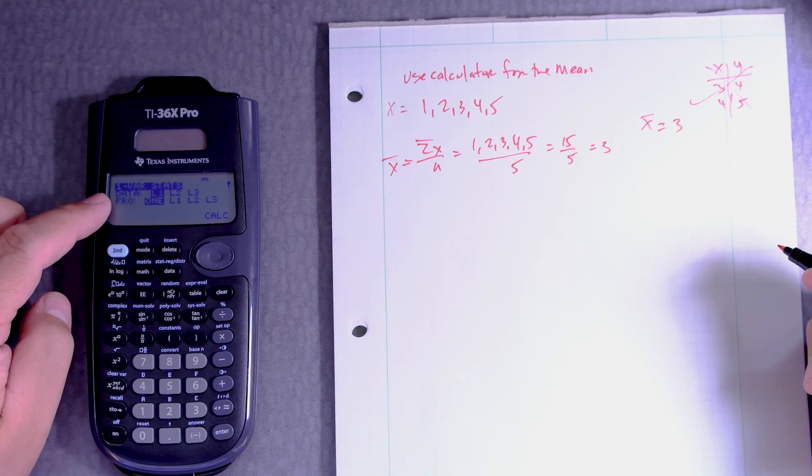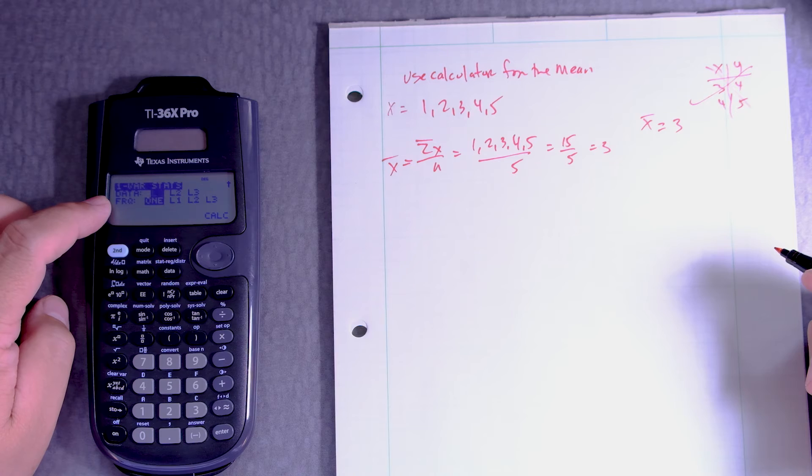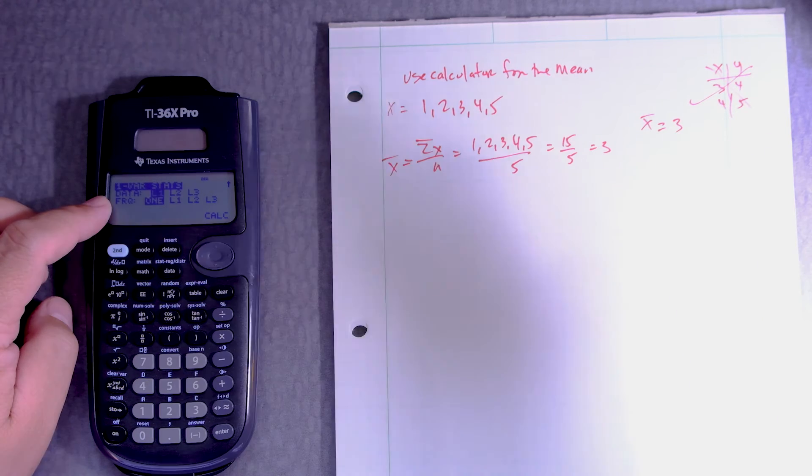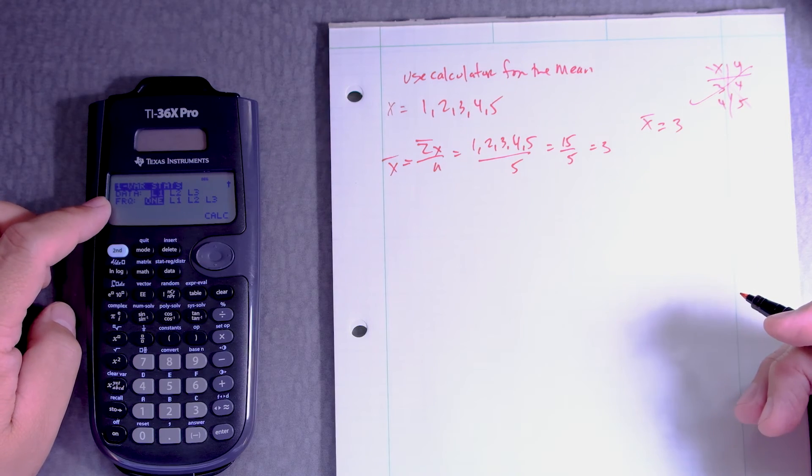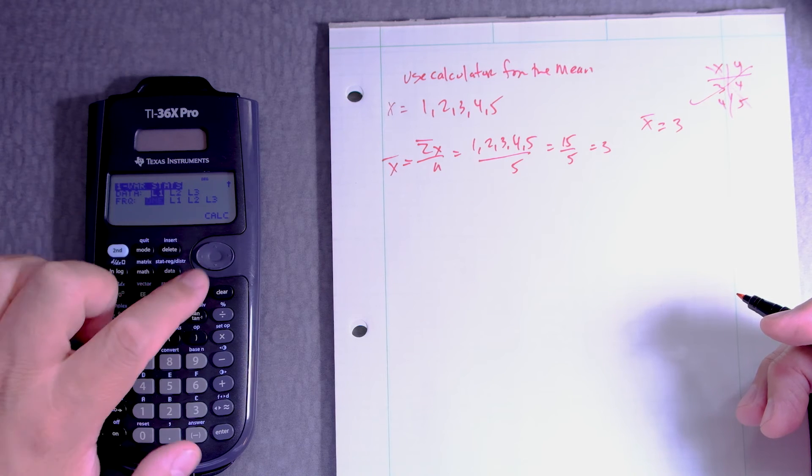Okay, and now remember we put the data in our first list L1. And the frequency, there is no frequency. There is no second column with the frequency. So we'll just leave it at one. This is very important